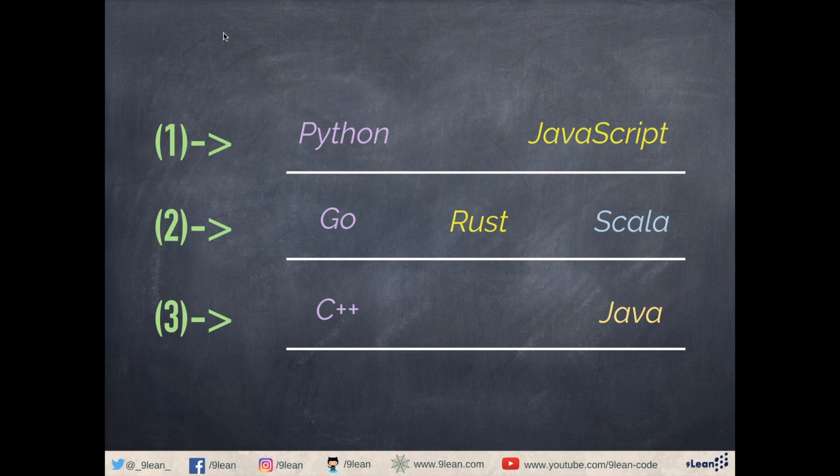As Stroustrup, the creator of C++, has said: you should learn four to five languages before you can call yourself a professional programmer. So here is my list for you.